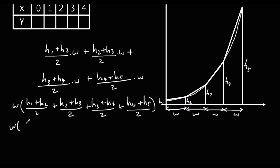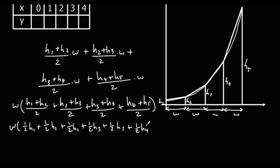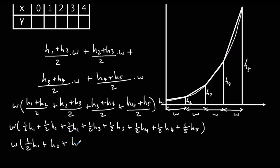Expanding gives us half of h1, plus half of h2 plus another half of h2, plus half of h3 plus another half of h3, plus half of h4 plus another half of h4, and finally half of h5. Simplifying further, that leaves us with half of h1, a whole h2, a whole h3, a whole h4, and half of h5.